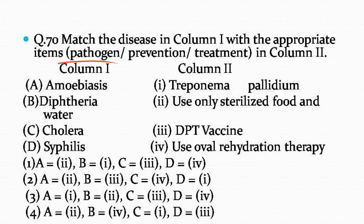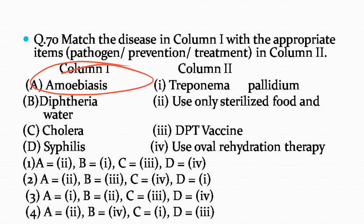Amoebiasis is caused by Entamoeba histolytica or Entamoeba coli, and its symptoms include abdominal pain or diarrhea, which is spread through contaminated food and water. Hence, using only sterilized food and water can prevent amoebiasis. Diphtheria, as you know, is a type of nose and throat infection and it can be prevented with the help of the DPT vaccine.